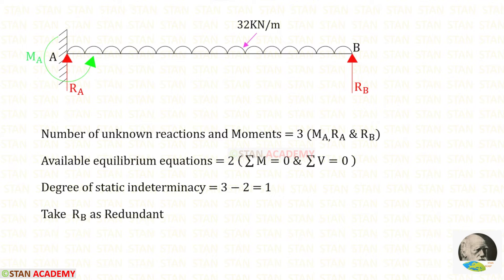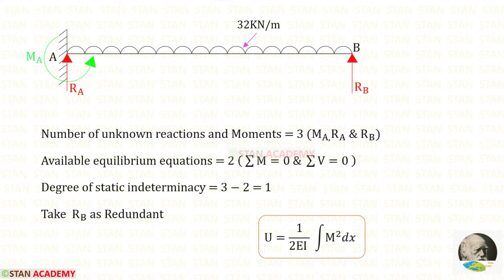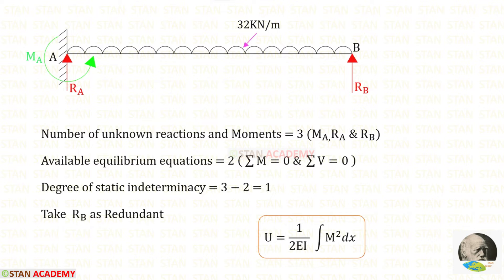Let us take RB as the redundant. To find RB we can use the strain energy formula: 1 upon 2EI into integration of M squared dx. To find the moment M, we have to make sections in this beam. Since we have a uniformly distributed load for the full span, only one section is enough.